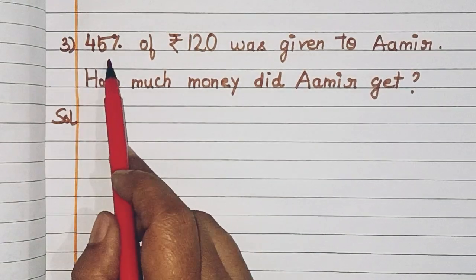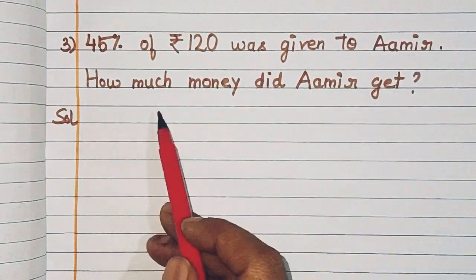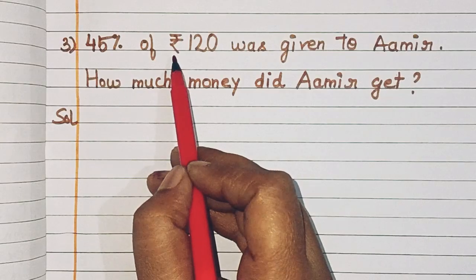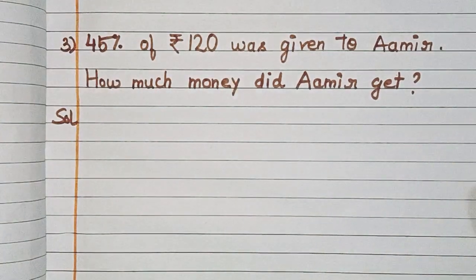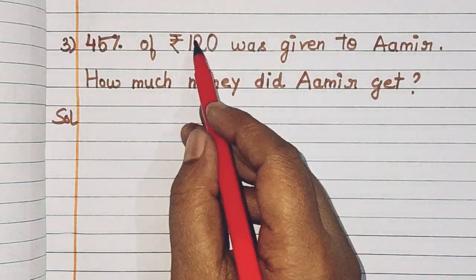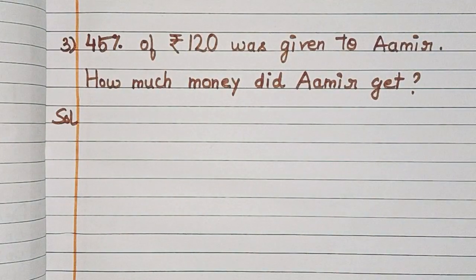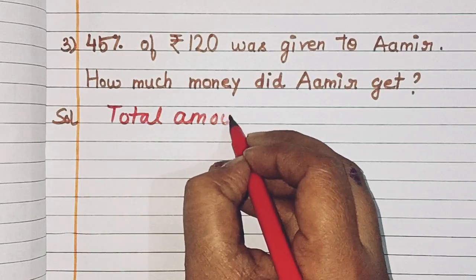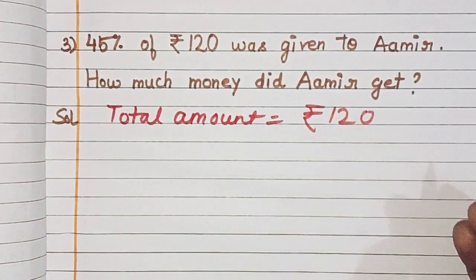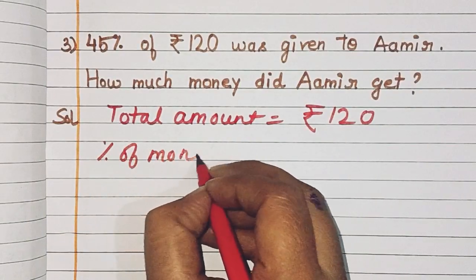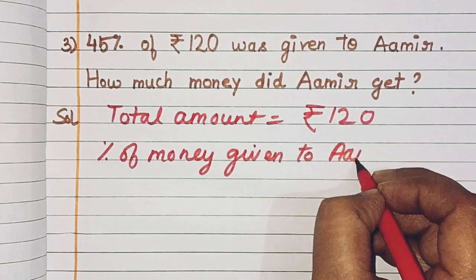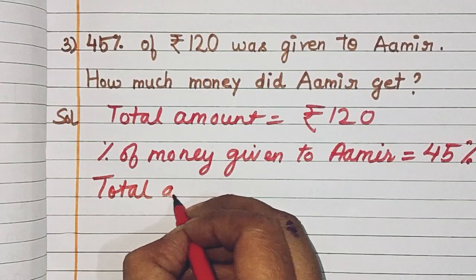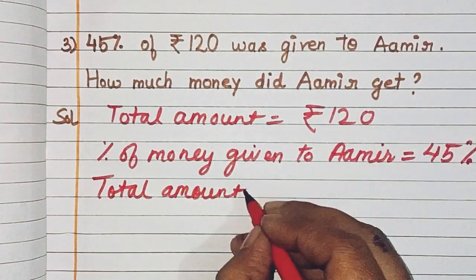Question number 3: 45% of Rs. 120 was given to Amir — how much money did Amir get? So we have to find 45% of 120, just as we did in the previous question. Total amount is Rs. 120, and percent of money given to Amir is 45%. Total money given to Amir — we calculate 45% of 120.